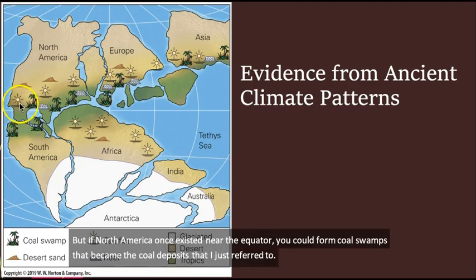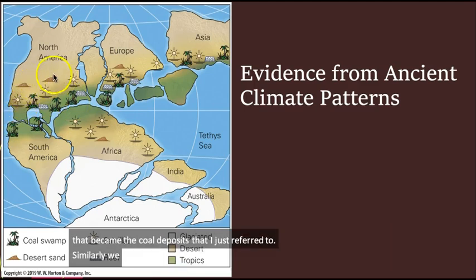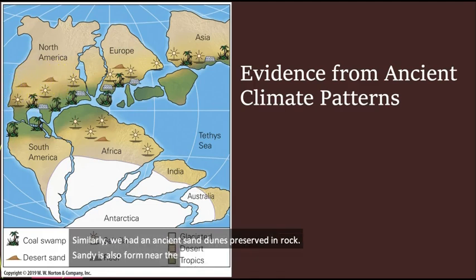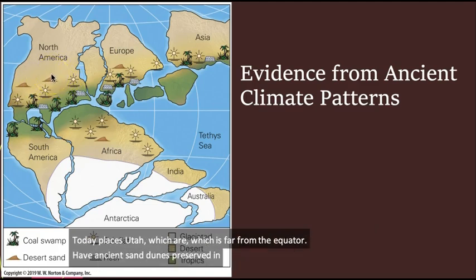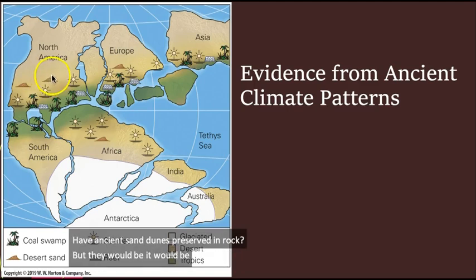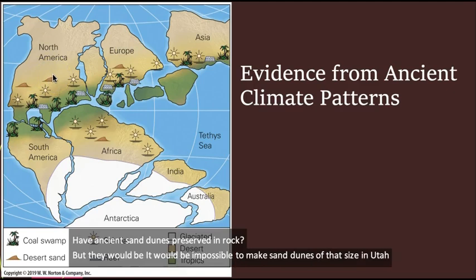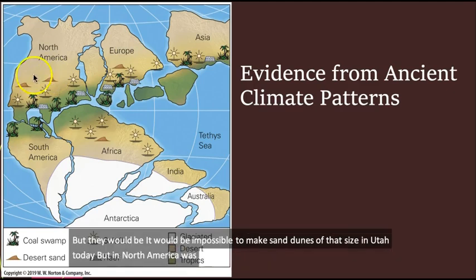Similarly, we have ancient sand dunes preserved in rock. Sand dunes also form near the equator. Think of the Sahara Desert, for example. Today, places like Utah, which is far from the equator, have ancient sand dunes preserved in rock. But it would be impossible to make sand dunes of that size in Utah today. But if North America was closer to the equator, where those sand dunes could have formed, then it is possible.